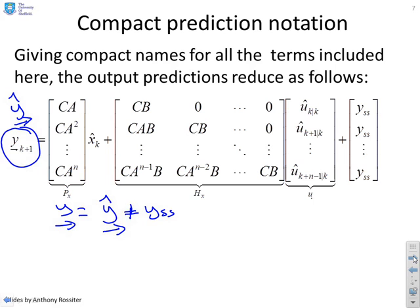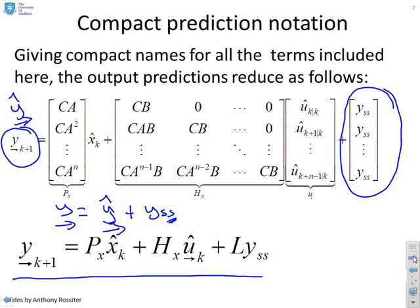Because y-hat future is the distance from the steady state. If I want the actual output, I need to add the steady state back on. And what do you notice over here on the right-hand side? I've simply added the steady state output to every row. Having done that, you find that the future predictions have this very simple form down here. Now the definitions of P_x and H_x and everything were covered in the earlier video. The key difference is that we're adding on this L times Y_SS.